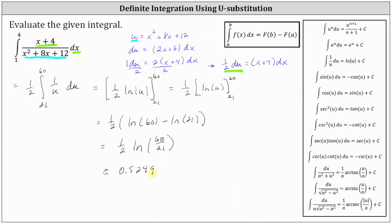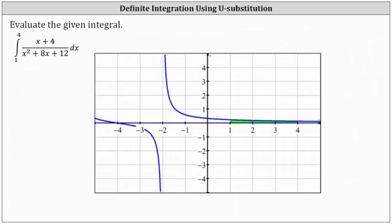Before we go, let's take a look at the graph of the integrand function over the closed interval from 1 to 4. If we shade the region bounded by the function and the x-axis, we have this green shaded region here. Notice how this area is above the x-axis,